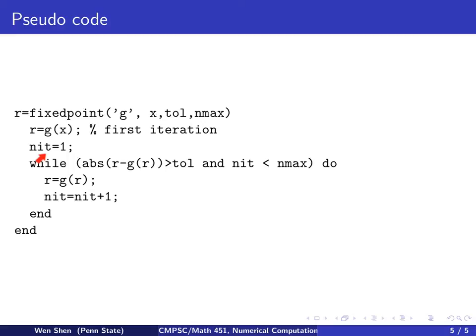You do one iteration, that's your counter number of iterations, set it to be 1, and you have a while loop, and that's your stop criterion. And then you do the iteration, you set r = g(r).